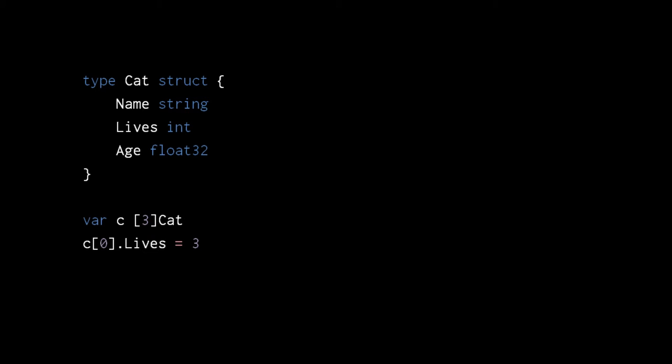Like with any other type in the language, we can create arrays and slices of structs. Here we create an array of three cats. We then access the first cat in the array and assign to its field lives. Here we create a slice of five cats and, again, access the first cat of the slice and assign to its field lives.